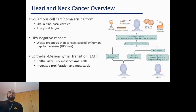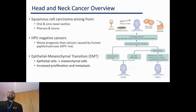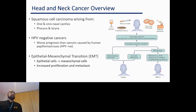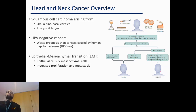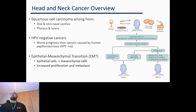To begin, a quick overview about head and neck cancer: it's a cancer of the squamous cells inside your mouth, sinus, throat, pharynx, etc. Today I'm talking about human papillomavirus negative cancers, which are associated with environmental carcinogens and have a worse prognosis than HPV-caused cancers. I also want to introduce the concept of epithelial mesenchymal transition — when epithelial skin cells transition to become mesenchymal connective tissue cells. Cancers with a higher proportion of EMT tend to have a worse prognosis and metastasize.